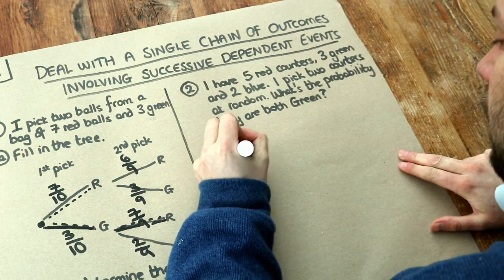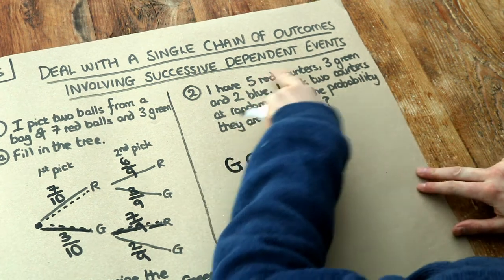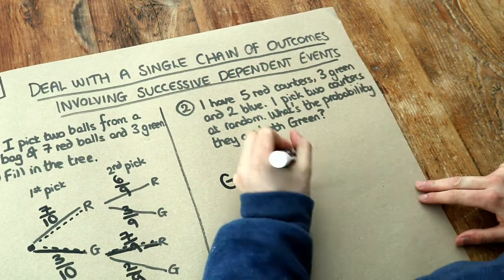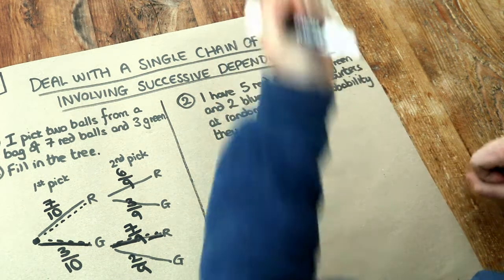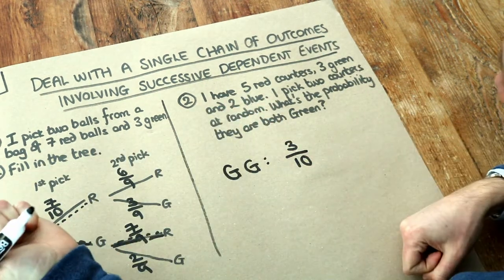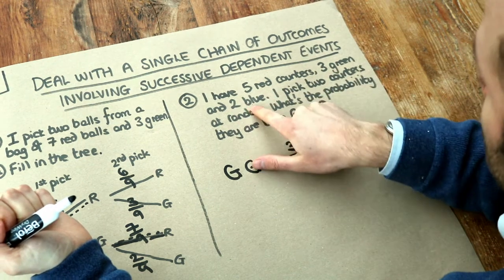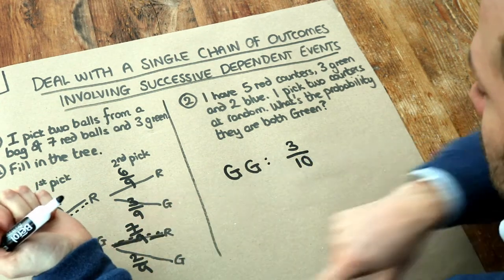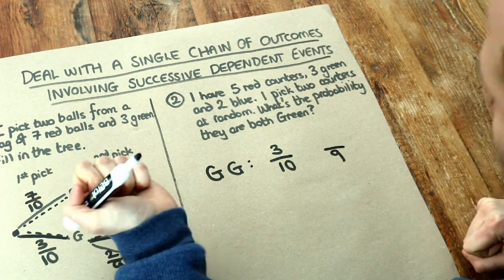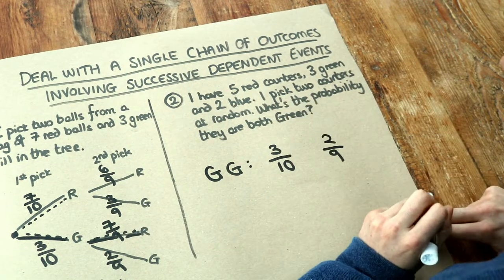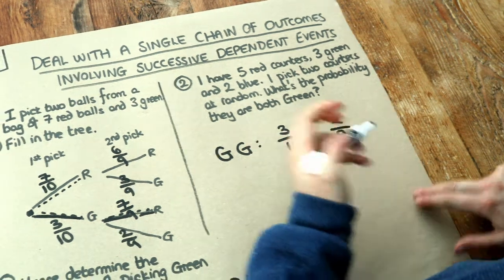Let's write out this sequence of outcomes — I'll write GG for green and green. The probability that the first pick is green: there are ten counters in total (five plus three plus two), and three are green, so it's three tenths. Now with one green counter removed from the bag, I've got five red, two green, and two blue left — nine counters total. The probability of getting green again is two ninths. Notice the numerator went down by one because there's one less green ball, and the denominator goes down by one because there's one less ball overall.